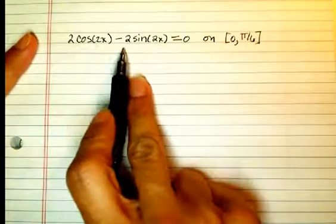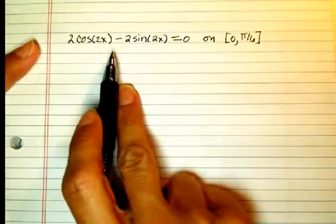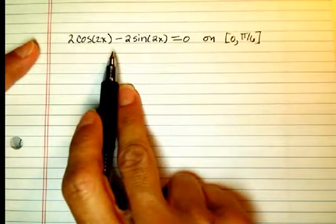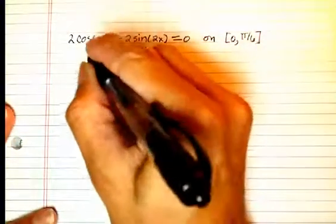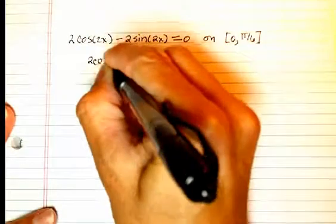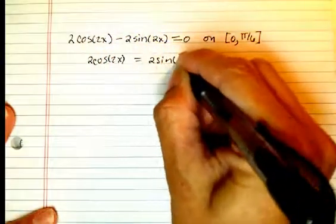I've got to do something here to make it so that I can easily solve this, and I am seeing an identity for sure. If I move that 2 sine of 2x over to the other side, I get 2 cosine of 2x equals 2 sine of 2x.